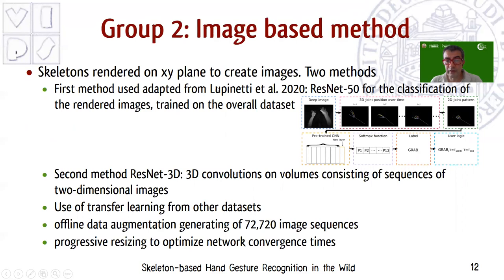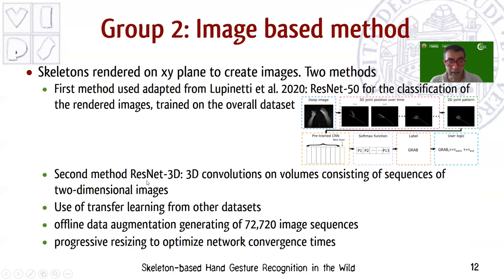The method proposed by group two is based on rendering images from skeletons. They projected the skeletons on the XY plane, rendered images, and used a convolutional neural network to classify the sequences. In the first run, they used a method derived from previous work using ResNet-50 for classification of the rendered images. In the second run, they used 3D convolutions with ResNet-3D to process the whole data volume. A key advantage is the ability to exploit transfer learning and data augmentation methods, using progressive resizing to optimize network convergence for faster results.